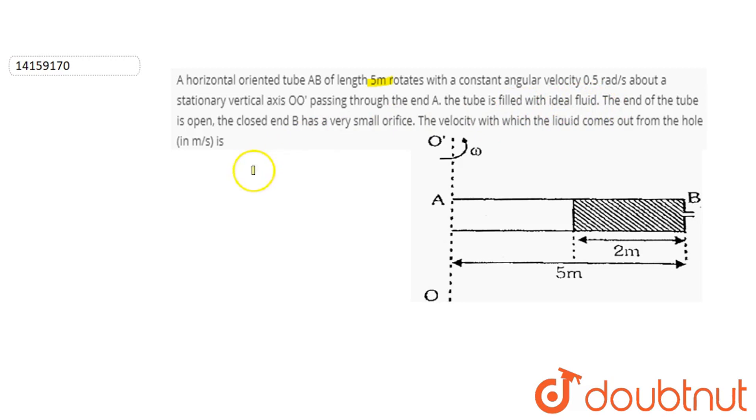The end of the tube is open. The end of the tube open, the closed end B has a very small orifice. The velocity with which the liquid comes out of the hole is...